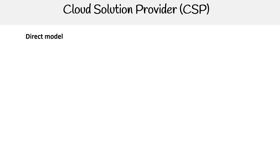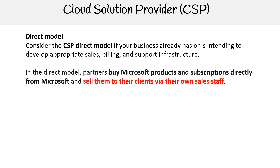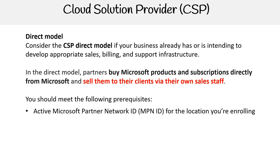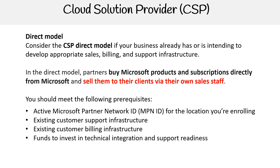Looking at the direct model, you may consider the CSP direct model if your business already has or is intending to develop appropriate sales, billing, and support infrastructure. In the direct model, partners buy Microsoft products and subscriptions directly from Microsoft and sell them to their clients through their own sales staff. Prerequisites include an active Microsoft Partner Network ID for the location you're enrolling in, an existing customer support infrastructure, an existing customer billing infrastructure, and funds to invest in technical integration and support readiness.